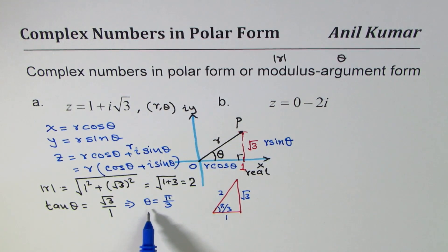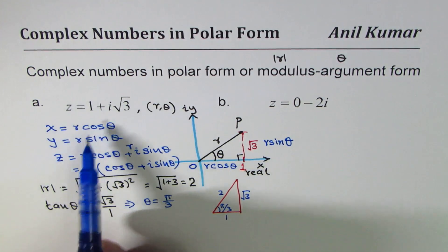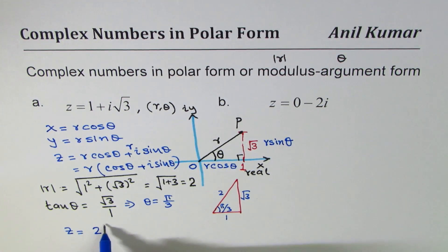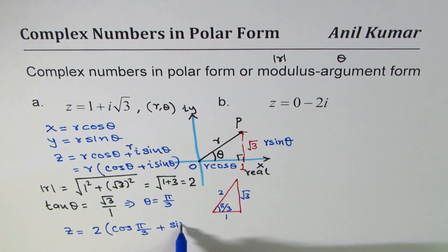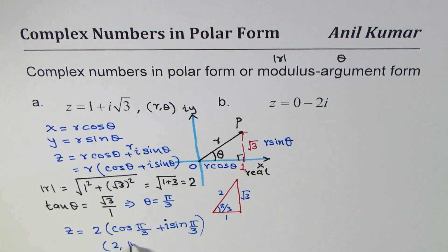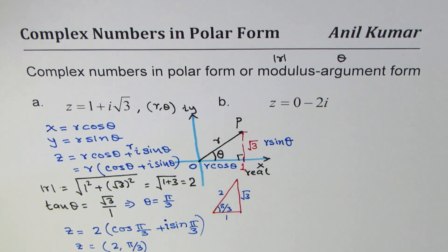Once we get θ = π/3 we can write the complex number z as: z = 2(cos(π/3) + i·sin(π/3)). You can also write it in modulus-argument form as [2, π/3]. That is the polar form of z = 1 + i√3. I hope it is clear how to write any complex number in polar form.